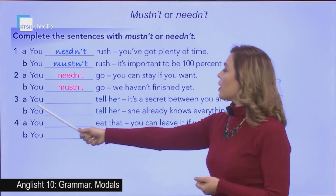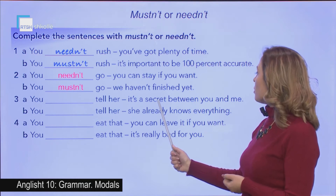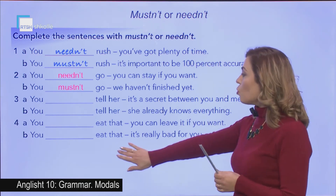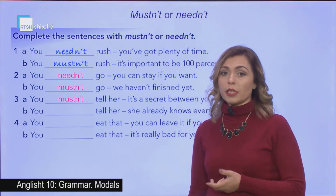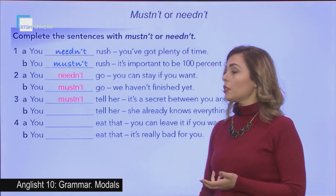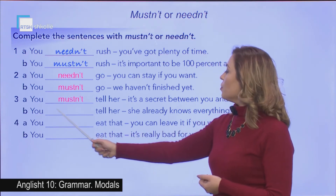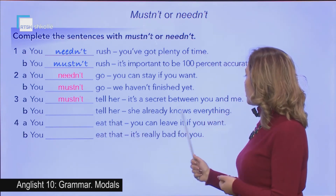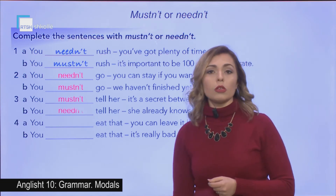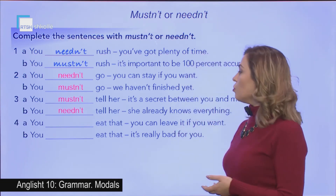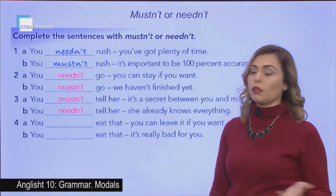Number three: 'You ___ tell her — it's a secret between you and me.' This is an obligation, so you mustn't tell her since it is a secret. Or, 'You ___ tell her — she already knows everything.' Since she knows, you needn't tell her, but still, if you want to, you can.